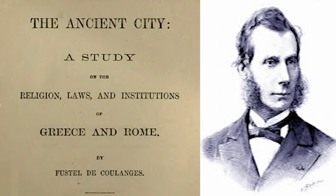Introductory note. Numa Denis Fustel de Coulanges was born in Paris in 1830. He attended the École Normale Supérieure, spent a year in excavations on the island of Chios, and became a professor of history at Strasbourg in 1860. In 1864, he published La Cité Antique.